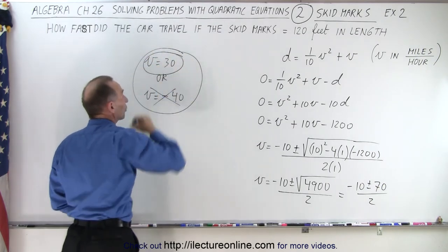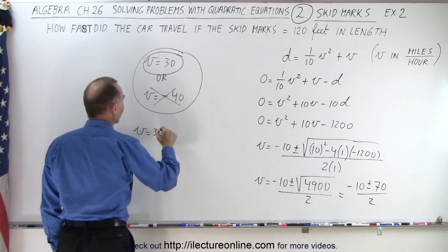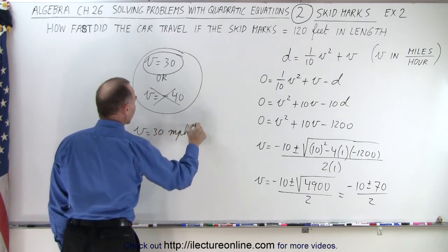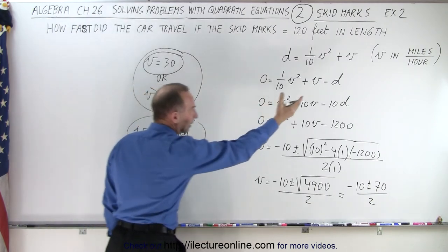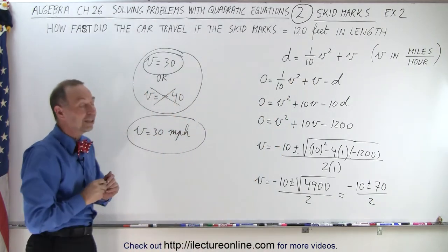And so we can then say that velocity equals 30 seems to make sense. That means the velocity of the car was 30 miles per hour. Because we were told that the equation is for miles per hour if distance is given in feet.